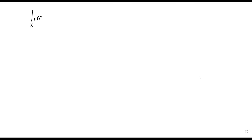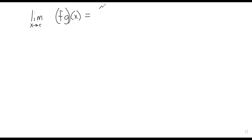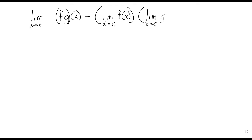If you remember the rules for addition and subtraction, you are not going to be shocked by the rules for multiplication. To find the limit of a product, we find the individual limits and multiply them together.